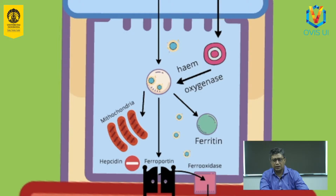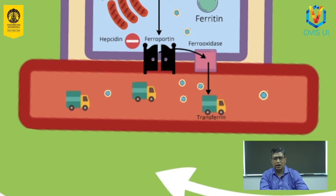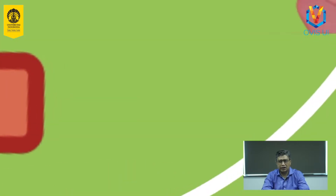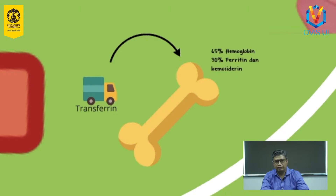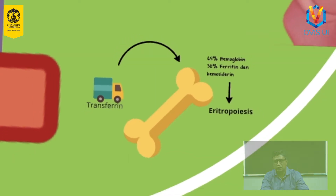Aktivitas ferroportin dapat diinhibisi oleh hepsidin, suatu polipeptida yang dihasilkan oleh liver. Oksidase atau hephaestin akan mengubah besi ferro menjadi feri sebelum berikatan pada transferin, suatu transporter besi dalam sirkulasi. Besi yang berikatan dengan transferin akan dibawa ke sumsum tulang untuk digunakan dalam eritropoiesis. Besi dalam bentuk hemoglobin meliputi 65% cadangan besi dalam tubuh. Sekitar 30% besi disimpan dalam bentuk feritin dan hemosiderin. Hemoglobin merupakan protein yang berfungsi untuk mengangkut oksigen, dan terdapat dalam sel darah merah yang telah diproduksi semenjak tahap proeritroblast.